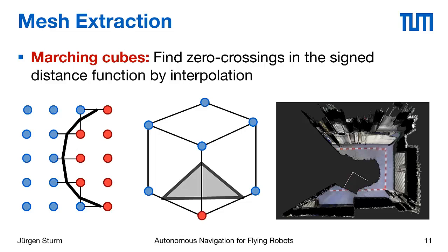One very popular algorithm for extracting a mesh from a signed distance function is called Marching Cubes. The basic idea is to find the zero crossings in the signed distance function — whenever the sign changes, there must be a surface somewhere in between. Marching Cubes interpolates the distance values of both voxels to find exactly the location of the estimated surface, giving a resolution much higher than the voxel grid resolution and producing much smoother surfaces. In 2D this is called Marching Squares, and in 3D Marching Cubes — looking at one cube at a time.